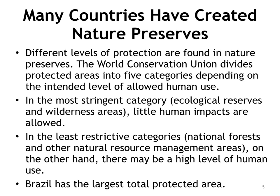Different levels of protection are found in nature preserves. The World Conservation Union divides protected areas into five categories depending on the intended level of allowed human use. In the most stringent category — ecological reserves and wilderness areas — few or no human impacts are allowed. In some strict nature preserves where particularly sensitive wildlife or natural features are located, human entry may be limited only to scientific research groups that visit on rare occasions. In some wildlife sanctuaries, for example, only a few people per year are allowed to visit to avoid introducing invasive species or disrupting native species.